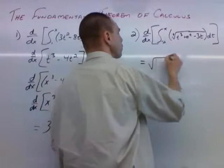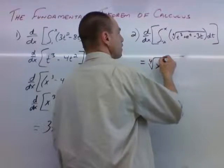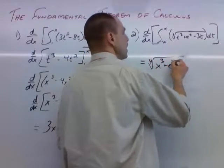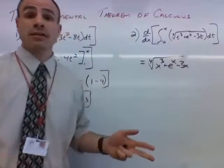So we're going to have the fourth root, and it's going to be x cubed plus e to the x minus 3x. And that's it.